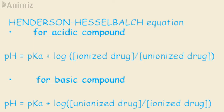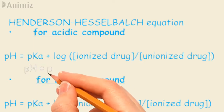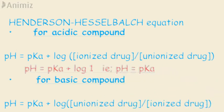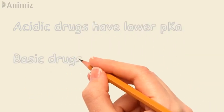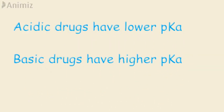In these equations, when the concentration of ionized and unionized drug becomes equal, the log term reduces to 0, since log 1 = 0. Thus pH equals pKa. So we can say that pKa is a characteristic of the compound or drug. Acidic drugs have lower pKa and basic drugs have higher pKa.